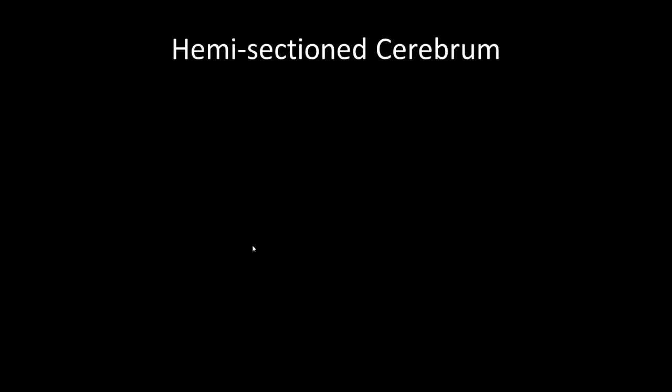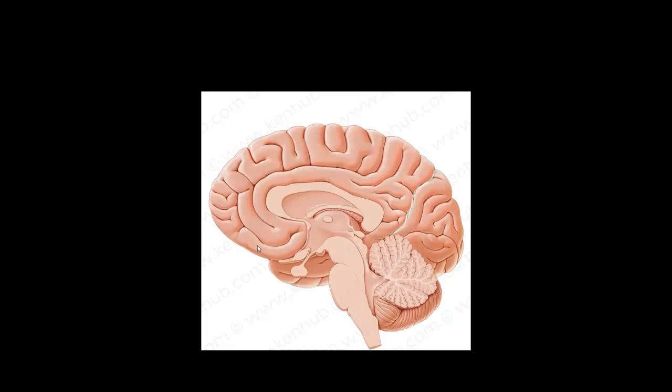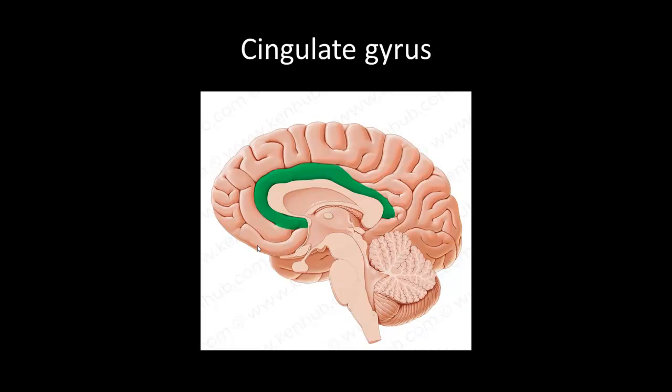Next we're going on to the hemisection cerebrum, looking at it from a medial perspective. First we have the cingulate gyrus, highlighted in green. The cingulate gyrus is part of the limbic system, or limbic lobe.